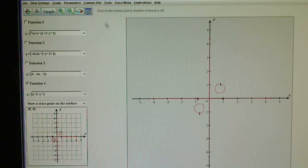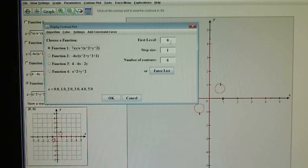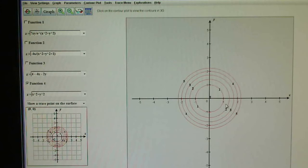I'm not sure what happened there. Let's try again. Draw a contour plot. First level, step size, number of contours. Oh, I've got to change this right here. I did have it on function one. I need to go to function four. Click okay. Well, that was really weird.